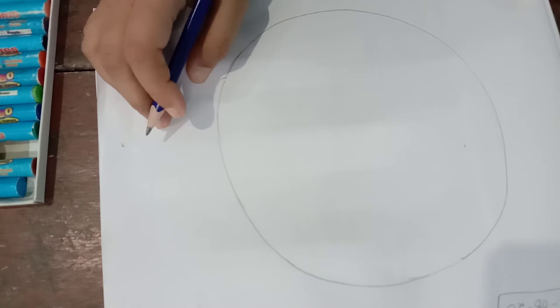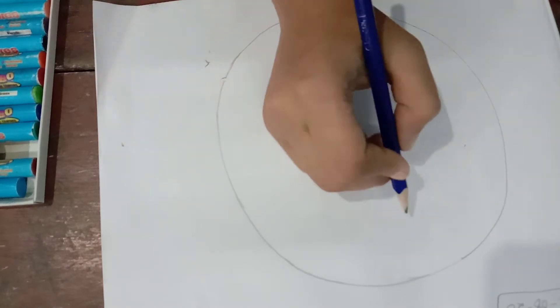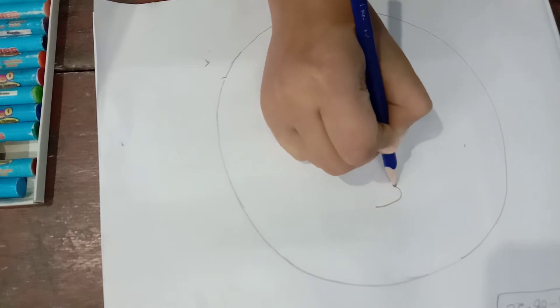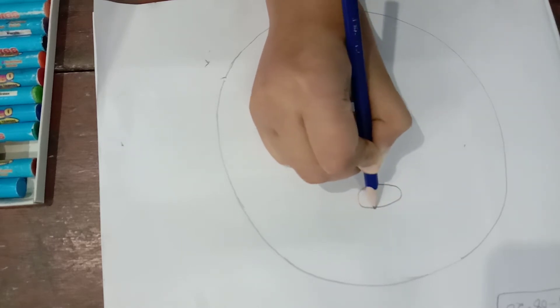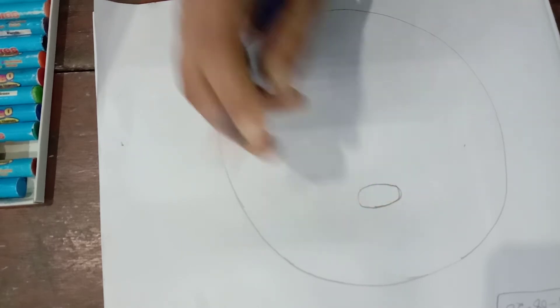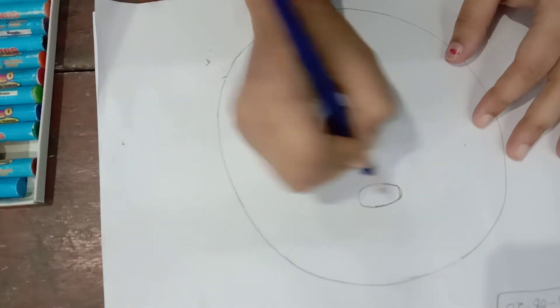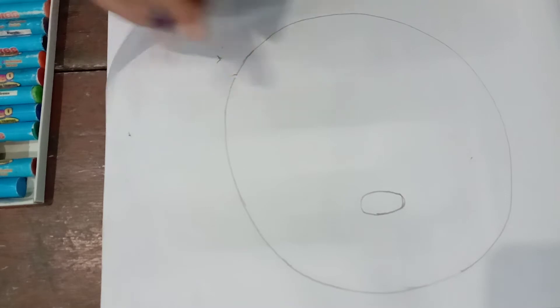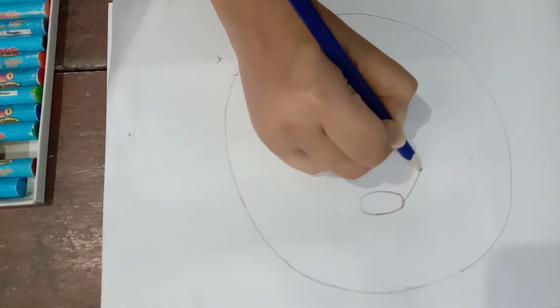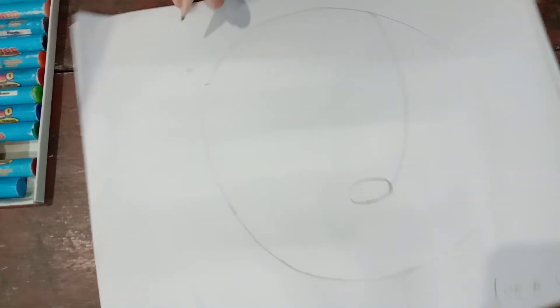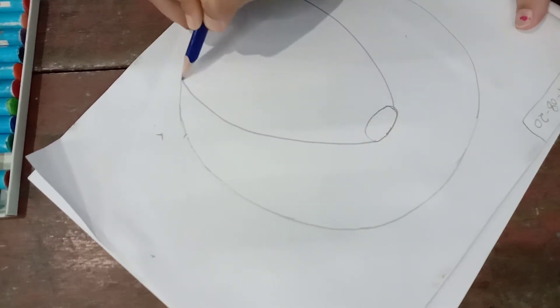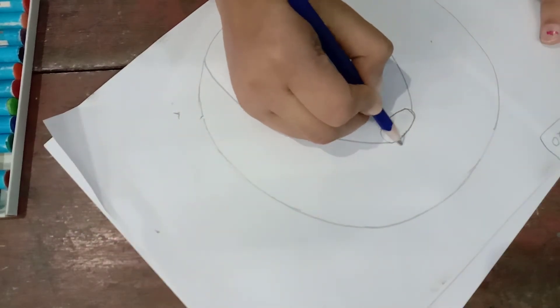Now draw a small circle in this ball. Like this. Now, curved line. Below draw. Again draw. Curved line.